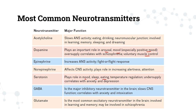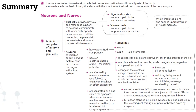Lastly, we have glutamate — the most common excitatory neurotransmitter in the brain, also involved in learning and memory. There are some evidences saying that glutamate may also be involved in schizophrenia.